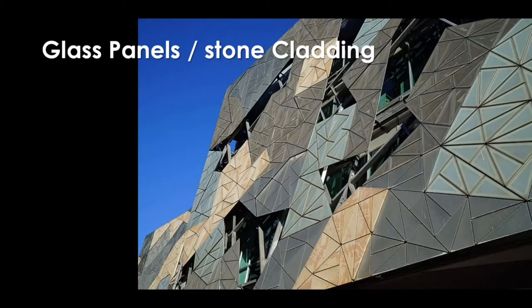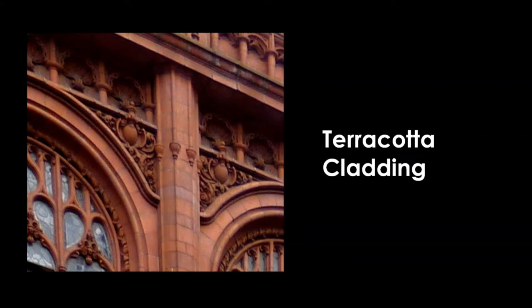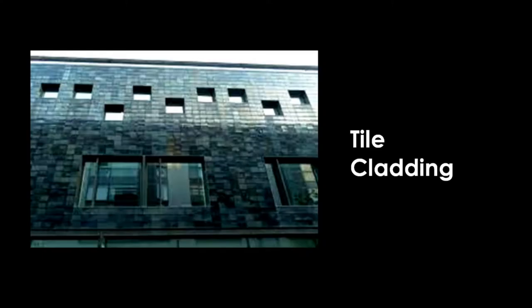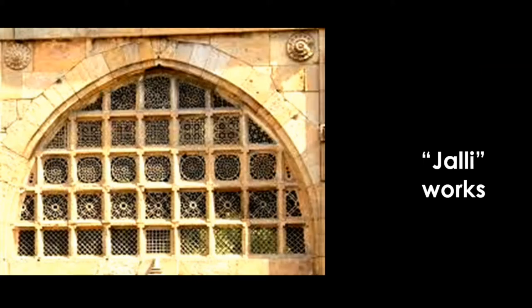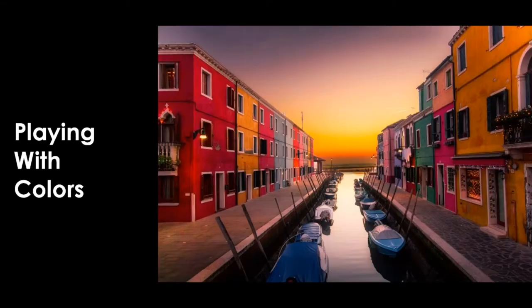Number 5: Facade treatments. Coming to the elevation, you should look into the context of the place. You should check for the local design elements and redesign them differently with your creativity. Facades can be treated with wooden cladding, glass panels, stone cladding, terracotta claddings, tile cladding, metal cladding, jaali works, and you can even play with colors.